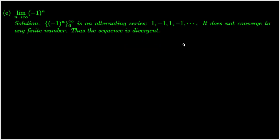We now work on question 5e. In this sequence, the terms of the sequence are alternating between 1 and negative 1. So the limit of the sequence does not exist. In other words, the given sequence is divergent.